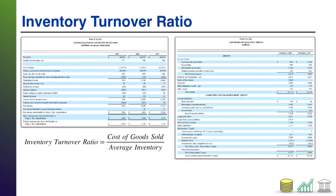Average inventory on hand — which, for simplicity, in introductory accounting courses is going to be beginning inventory plus ending inventory divided by two — is essentially telling you what is the typical amount of inventory you have on hand. This is valuation, but still the higher the value, the higher the physical amount correlates. So all we're doing is saying: of the typical amount of inventory you have on hand, how much do you sell?